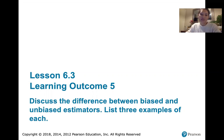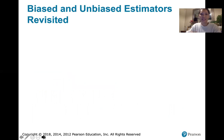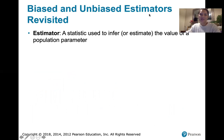We talked about biased and unbiased estimators back in Chapter 3 when we discussed sample standard deviation and sample variance. But we're revisiting these ideas now that we understand discrete and continuous probability distributions and how we can find the mean of a random variable using probability distributions. Here is what we talked about back in Chapter 3: an estimator is a statistic used to infer or estimate the value of some population parameter.